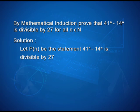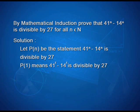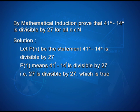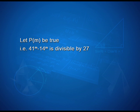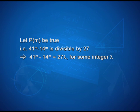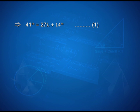Let P(n) be the statement: 41 to the power n minus 14 to the power n is divisible by 27. P(1) means 41 minus 14 is divisible by 27, that is 27 is divisible by 27, which is obvious. Therefore P(1) is true. Now let P(m) be true, that is 41 to the power m minus 14 to the power m is divisible by 27. This implies 41 to the power m minus 14 to the power m equals 27λ for some integer λ. This implies 41 to the power m equals 27λ plus 14 to the power m. Take this as the first equation.